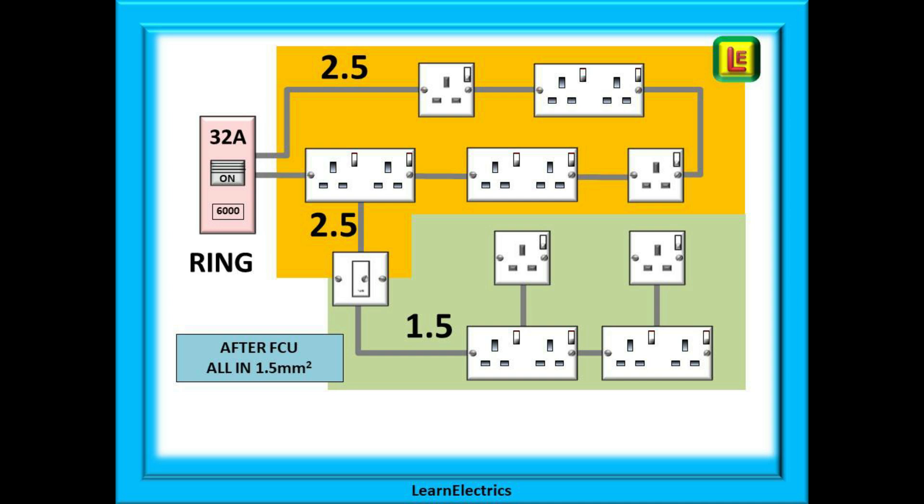And the distribution of sockets after the FCU can be in any pattern to suit you. There can be spurs on spurs as you wish because you cannot load the cable above the 13 amp fuse in the FCU.